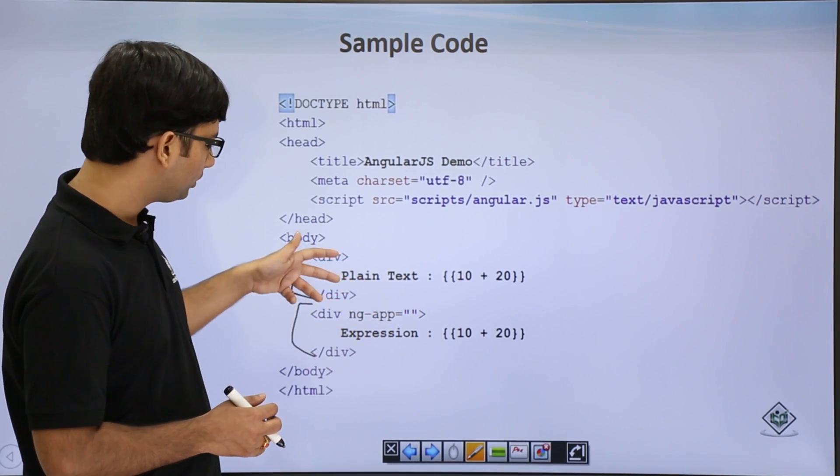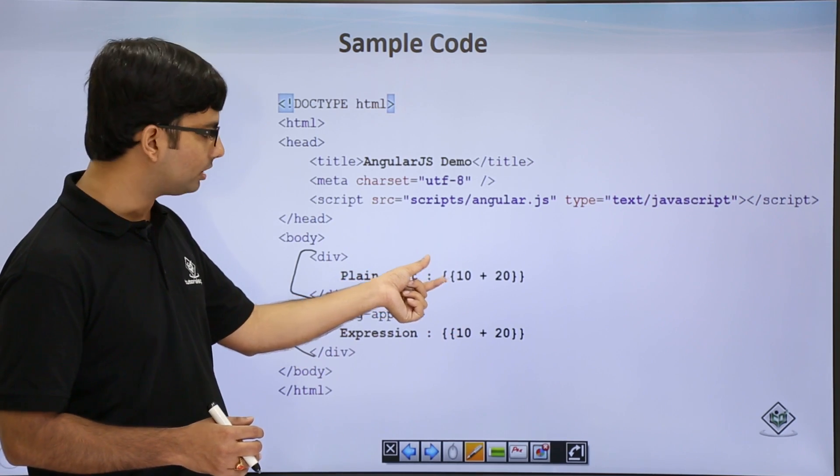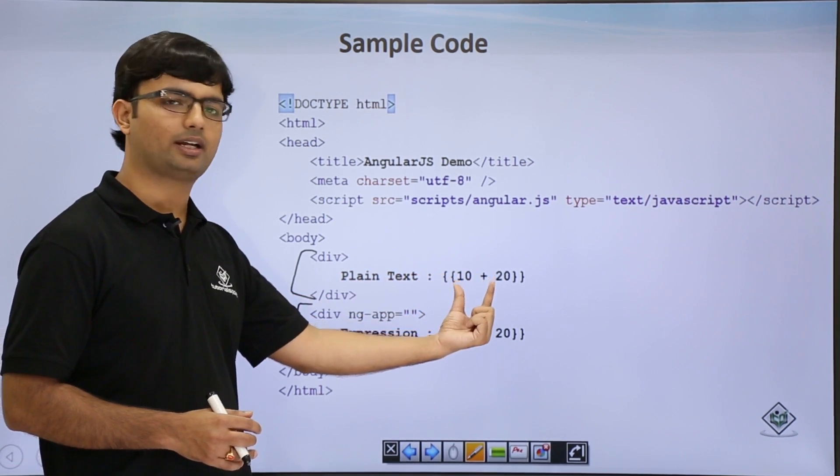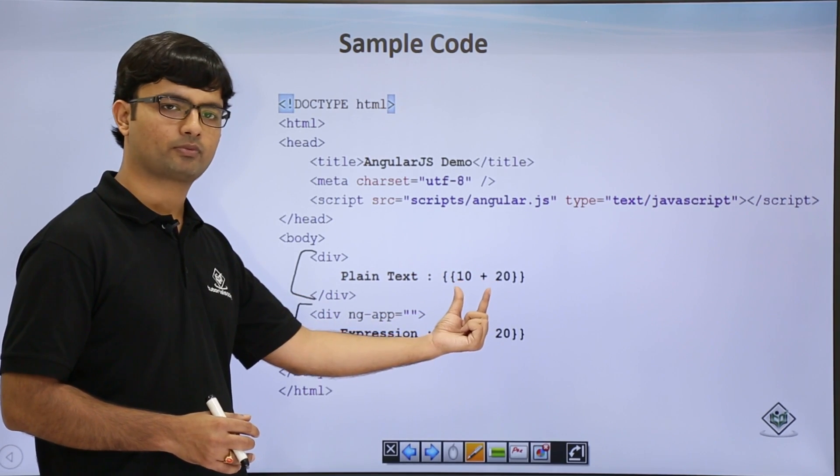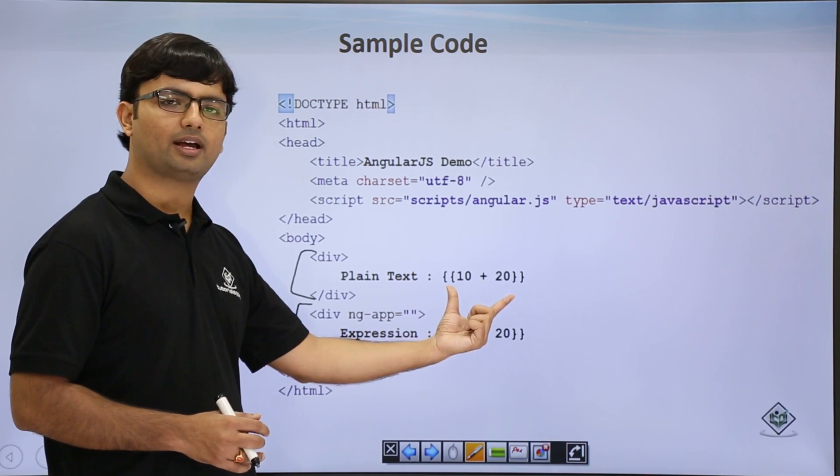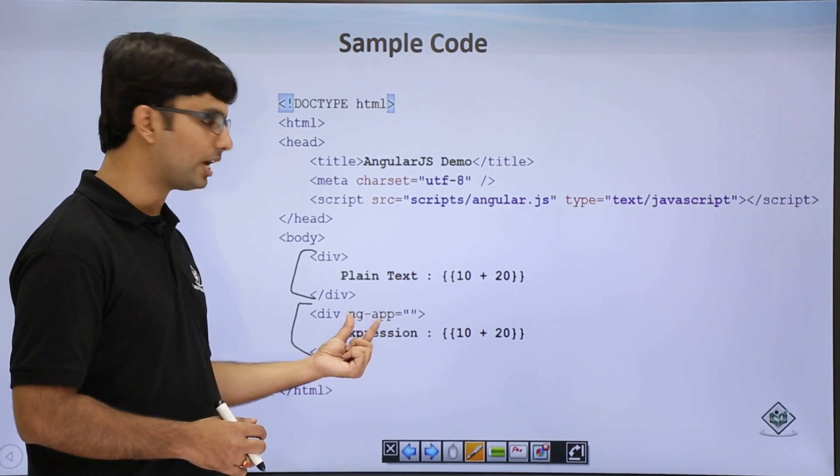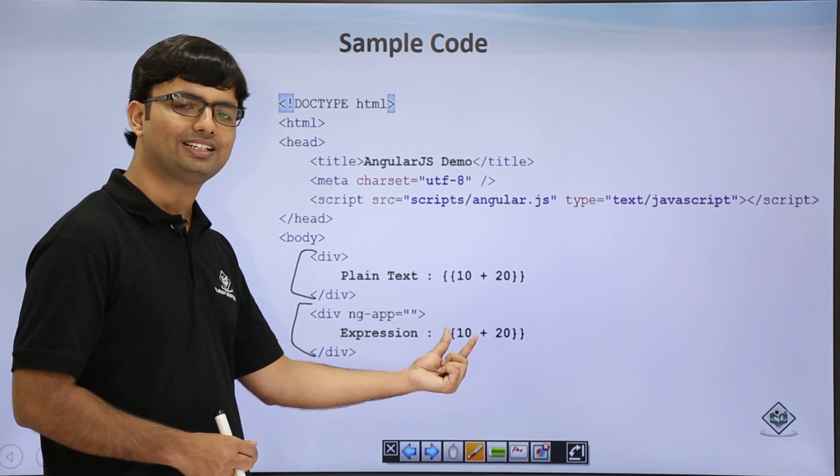Here you can see the same thing has been written. Inside the double curly braces, I put a text like 10 plus 20. But in the previous div, this will be treated as plain text. Rather, once I put this ng-app, here it will be treated as an expression. Whenever you want to put an expression in AngularJS, you can pass these double curly braces.